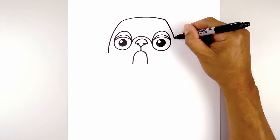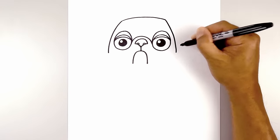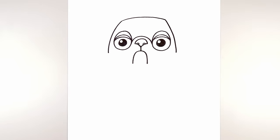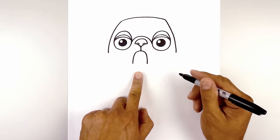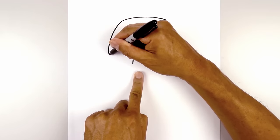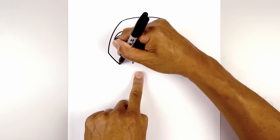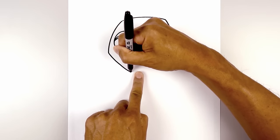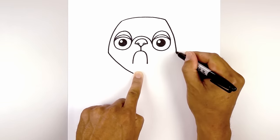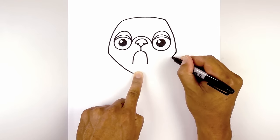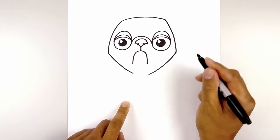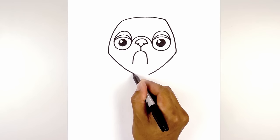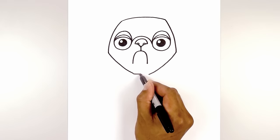We're going to do the same thing on the right side. Now from here we're going to curve down and in towards the center, leaving a gap in the middle. Start on the left, curve down and pull that in. Do the same thing on the right, curving down and then in. We're going to close out the bottom with a straight line from left to right.